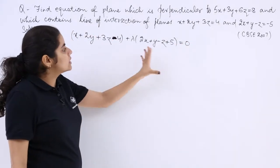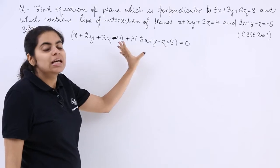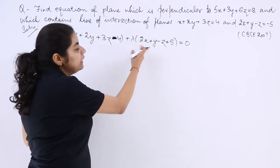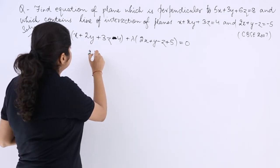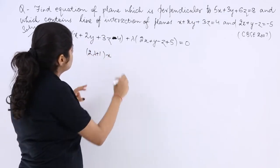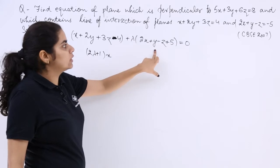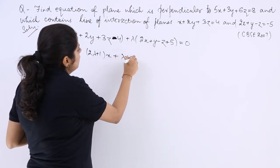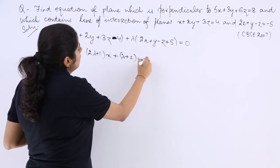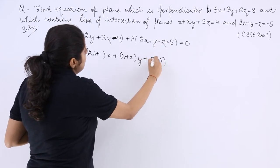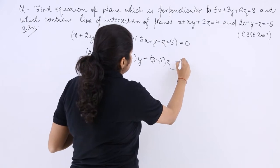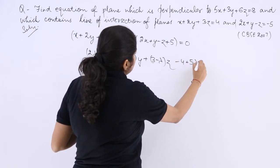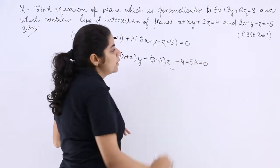Now we can simply solve this, multiply lambda inside and take x common. This is 2 lambda plus 1 multiply by x, then lambda plus 2 multiply by y, plus 3 minus lambda multiply by z, minus 4 plus 5 lambda is equal to 0.